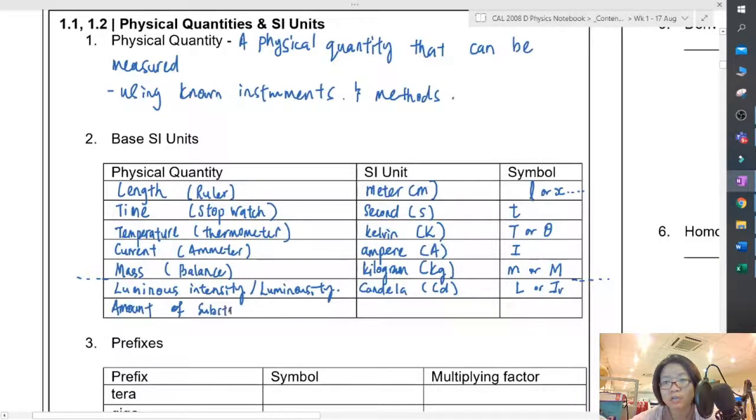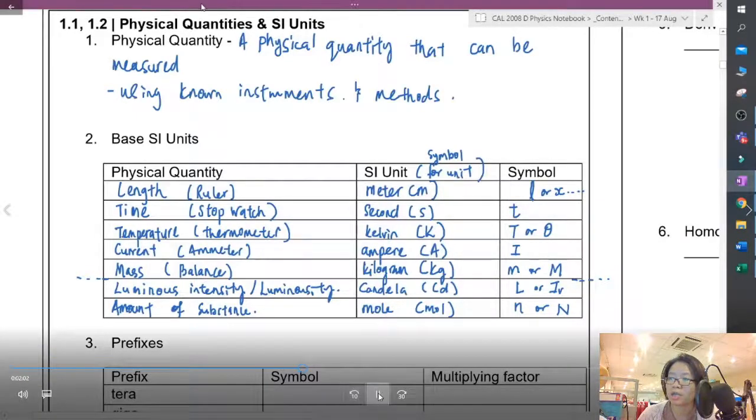Generally, the symbol is more flexible - you can use different symbols. But for SI units, there is no variation. The last one that you will see in chemistry will be the amount of substance, represented with lowercase n or uppercase N.